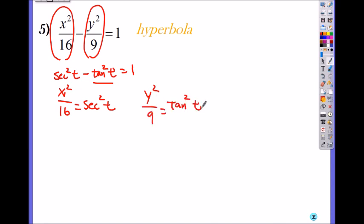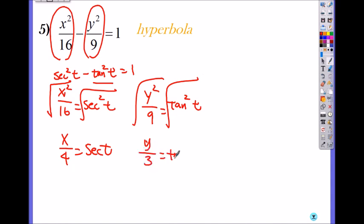Now you're solving for x and y, so let's square root that first. So I get x over 4 equals to secant of t. Here when I square root the whole thing, I get y over 3 equals to tangent of t. So now you multiply by 4, so I get x equals to 4 secant of t. And here when I multiply by 3, I get y equals to 3 tangent of t.